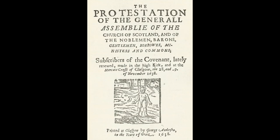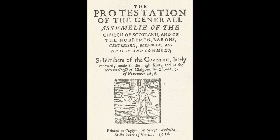Finally acknowledging the scale of support against his religious policy, Charles agreed to hold a General Assembly in Glasgow, sending his ambassador James Hamilton, the Duke of Hamilton, to negotiate on his behalf. However, this did not go to plan and there was a breakdown in relations between the king and the Covenanters, who had expelled the bishops for corruption and declared that the General Assembly had the right to meet every year. Charles was enraged and considered force his only option.